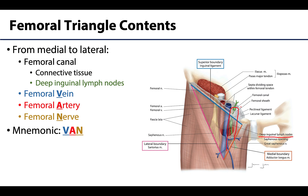Moving from medial to lateral, we reach the larger structures, starting with the femoral vein. The femoral vein is the continuation of the popliteal vein, so both are considered deep veins, even though at this level the femoral vein is very superficially located. Past the inguinal ligament, the femoral vein becomes the external iliac vein.